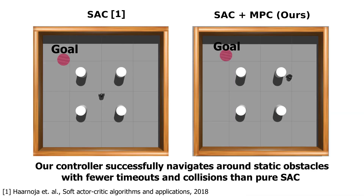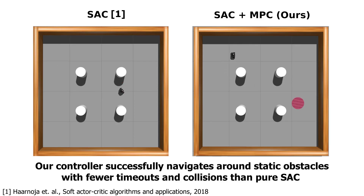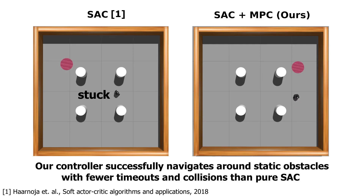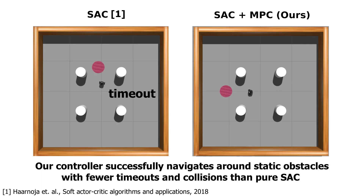To demonstrate our approach, we solve two mobile robot navigation tasks. The first is in the case of static obstacles, where we have random goals spawned randomly across the environment and the robot navigates between the obstacles to reach them. The video on the left shows the SAC while the video on the right shows our approach.